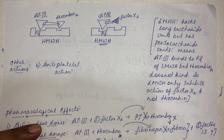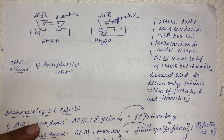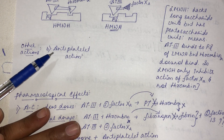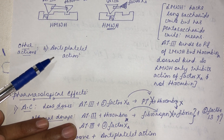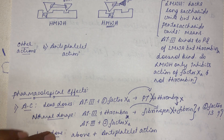High molecular weight heparin is more efficacious because it cleaves both thrombin (factor 2a) and factor 10a. High molecular weight heparin also has anti-platelet action and at higher doses may cause platelet destruction, leading to thrombocytopenia.